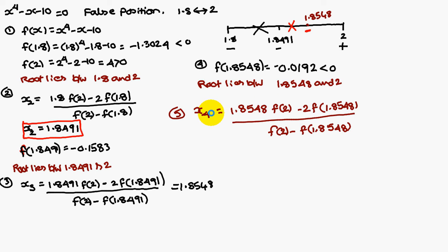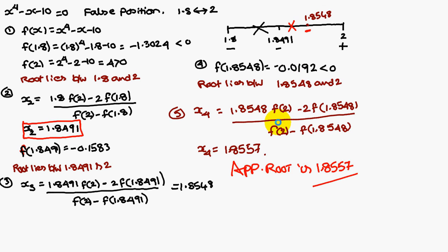x4 by the false position method: x4 = (1.8548 × f(2) - 2 × f(1.8548)) / (f(2) - f(1.8548)). f(1.8548) is minus 0.0192. Substitute the values and simplify — you are going to get 1.8557. Therefore, the approximate root is 1.8557. Thank you.